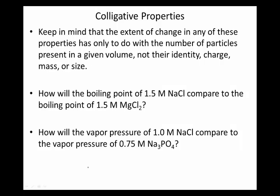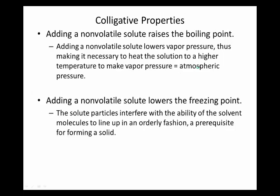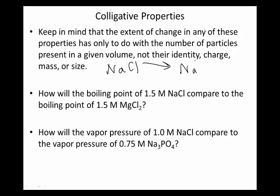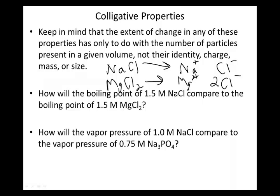Again, what the solute is doesn't matter — the nature of the particles doesn't matter. But imagine making a 1.5 molar solution of sodium chloride versus a 1.5 molar solution of magnesium chloride. What's going to be the difference between the two? Remember, when ionic compounds dissolve, they dissociate. Sodium chloride is going to dissociate into one sodium ion and one chloride ion per formula unit. Magnesium chloride is going to dissociate into one magnesium ion and two chloride ions per formula unit. So magnesium chloride represents more solute particles than an equivalent concentration of sodium chloride — three particles versus two particles.